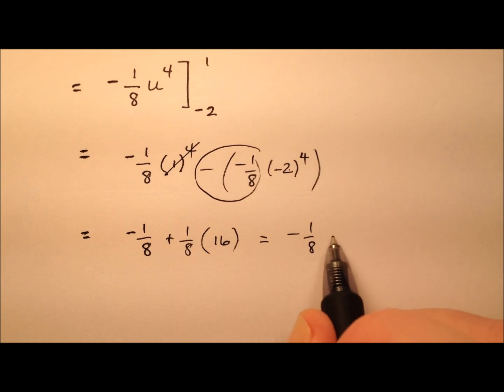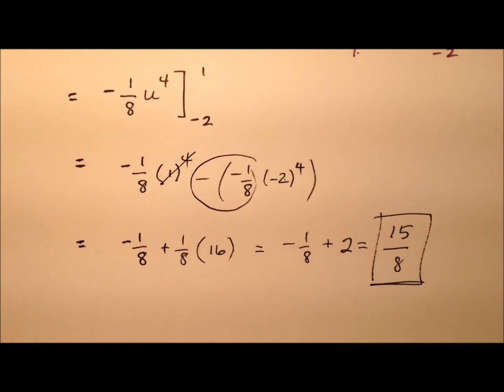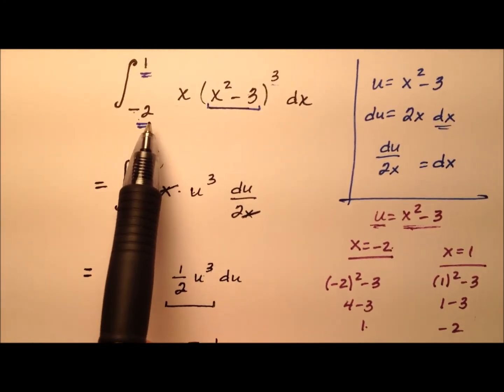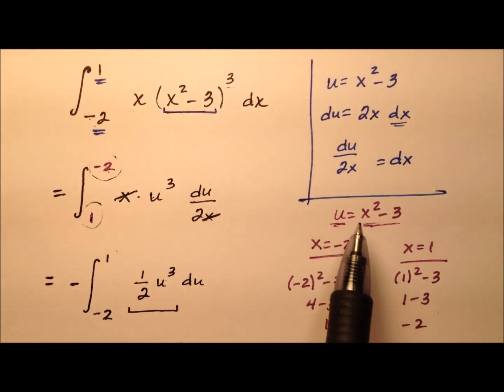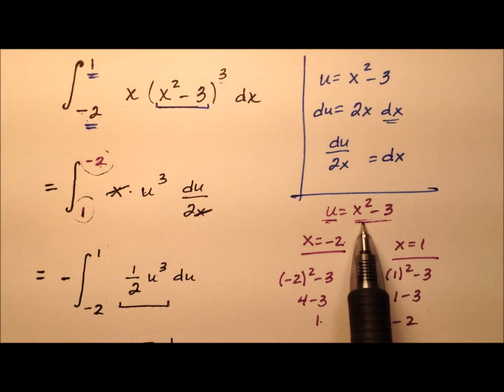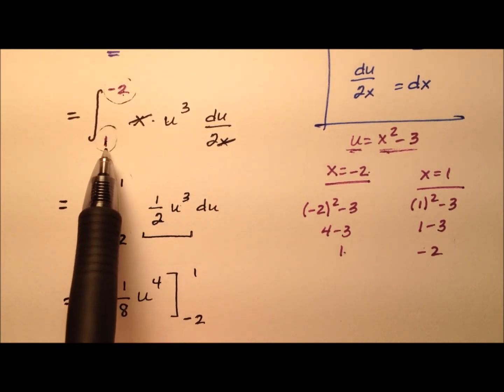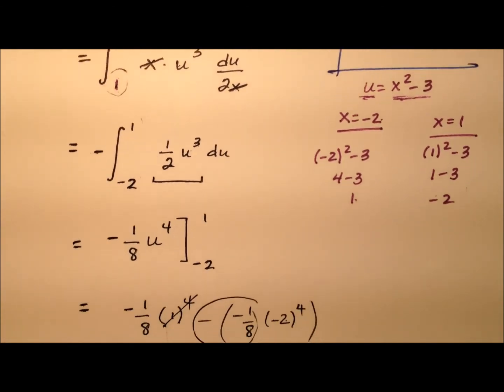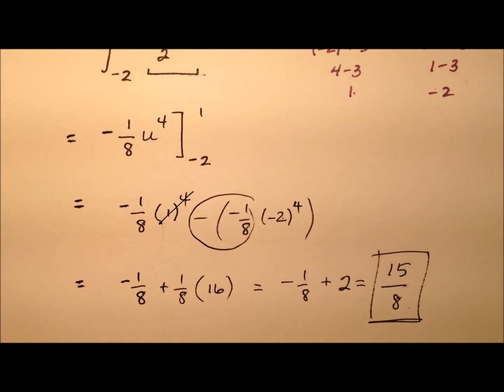So it looks like negative 1 eighth plus 2, and that'll end up being 15 eighths for when we evaluate this definite integral. So 15 eighths, let's recap what we did. We started with this definite integral. We used a u substitution, but remember that when we use a u substitution with a definite integral, we need to update or change our limits of integration so they're also in terms of u. We went ahead and used the property where we switched them because we went from big to small instead of small to big, so we put the negative out front. And then we did the integration and evaluated. So 15 eighths is what we get for this example.